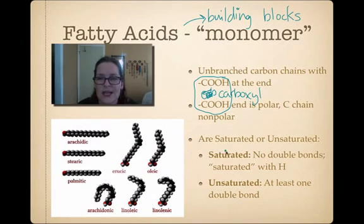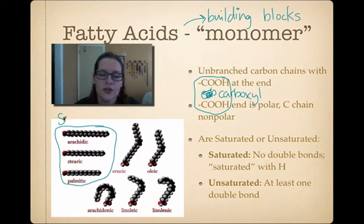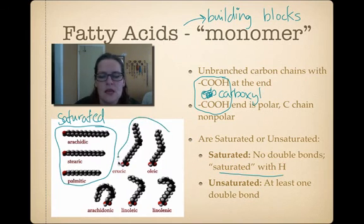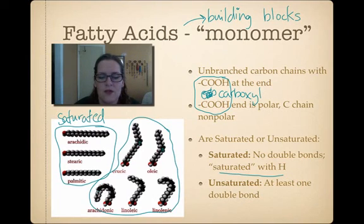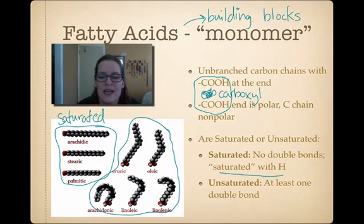Fatty acids can be either saturated or unsaturated. In chemistry, saturated means they have the maximum number of hydrogen atoms - there are no double bonds. These are your saturated fats: maximum hydrogen, saturated with hydrogen. Unsaturated fats, on the other hand, have double bonds occurring between carbons. Because double bonds are shorter, the carbons get closer together, which is why you see bending - this one looks folded in half because it has many double bonds with different bond angles.